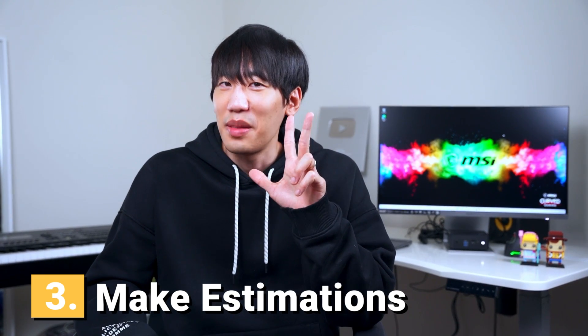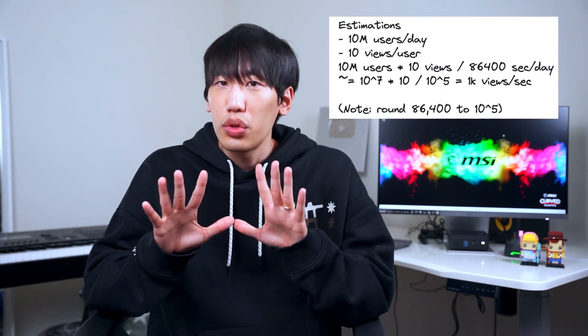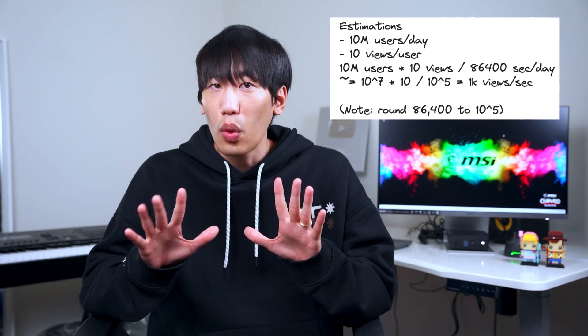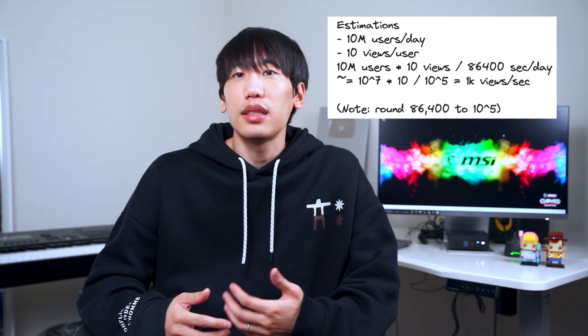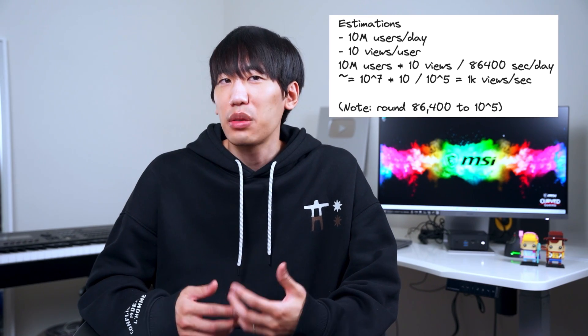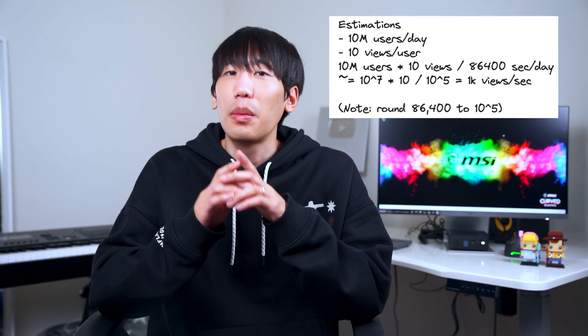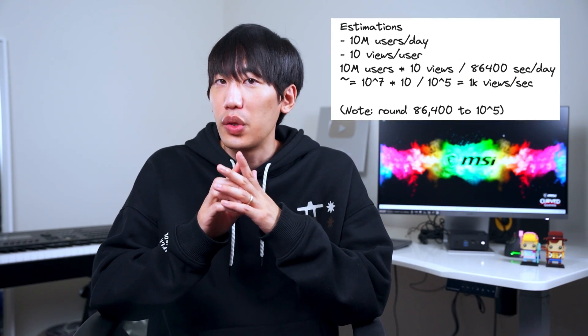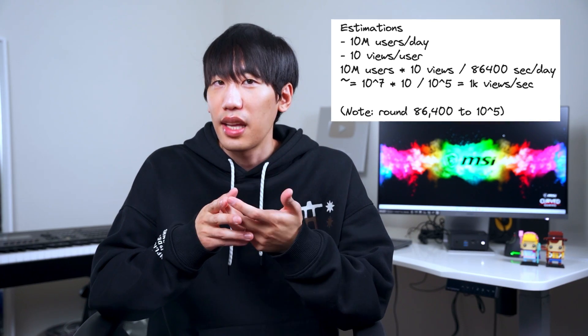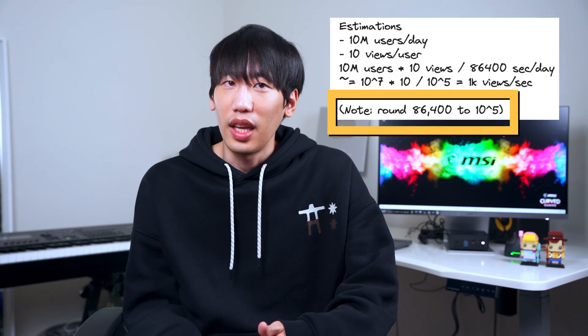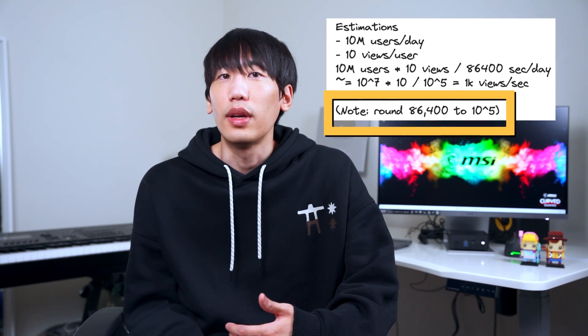Step 3: Make estimations. Ask the interviewer about the expected daily traffic. If the interviewer provides a specific number, try to calculate a reasonable estimation based on that. For example, if there are 10 million users per day and each user views 10 stories on average, you can estimate that the system needs to handle around 1,000 views per second. Here's a pro tip: to simplify calculations, remember the number 86,400 which represents the number of seconds in a day. Round this up to 100K or 10 to the power of 5 to facilitate calculations.